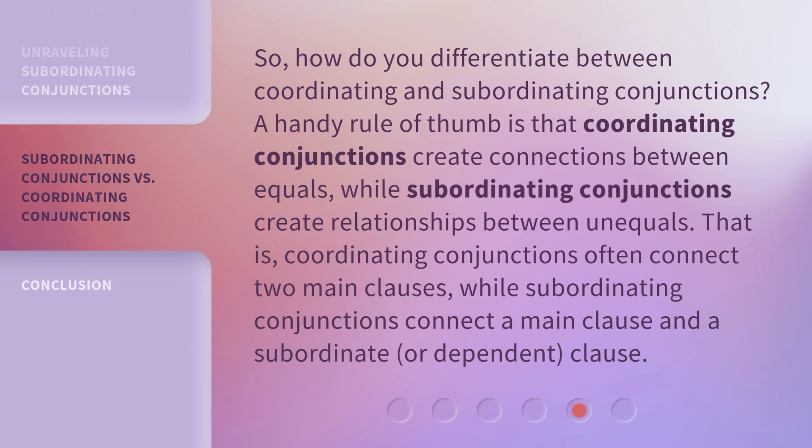So, how do you differentiate between coordinating and subordinating conjunctions? A handy rule of thumb is that coordinating conjunctions create connections between equals, while subordinating conjunctions create relationships between unequals. That is, coordinating conjunctions often connect two main clauses, while subordinating conjunctions connect a main clause and a subordinate, or dependent, clause.